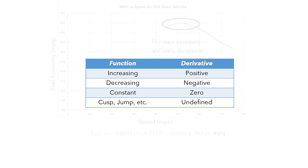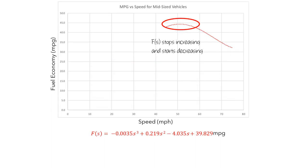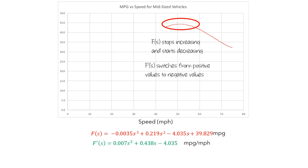Keeping this in mind, let's return to the graph of fuel economy versus speed. We know that the fuel economy will be largest at a speed where f stops increasing and starts decreasing — in calculus terms, this is when f' switches from positive values to negative values. To figure out where this happens, let's compute the formula for the derivative function. Since f is a polynomial function, we can use the power rule to get f' = −0.007s² + 0.438s − 4.035.